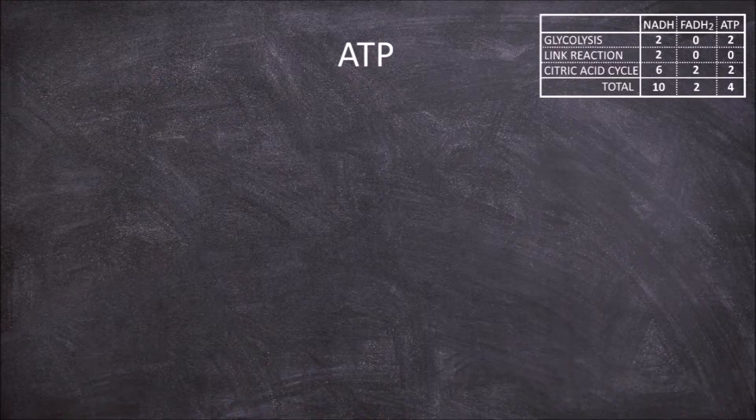This gives us 4 ATP and a total of 10 NADH and 2 FADH2s that go into the electron transport chain.